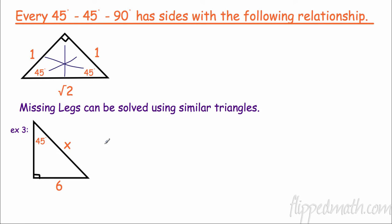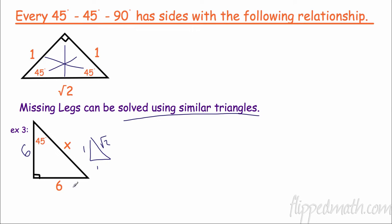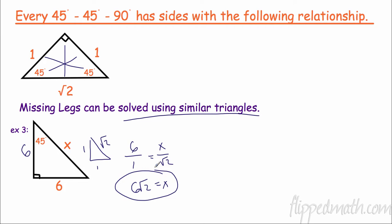If we have one length, we can find all the other lengths. We know this leg is 6 because the legs are the same. We can use the special right triangle shortcut: draw the reference triangle with ratio 1 : 1 : √2. Setting up the proportion — 6 is to 1 as x is to √2 — gives 6/1 = x/√2, so x = 6√2.